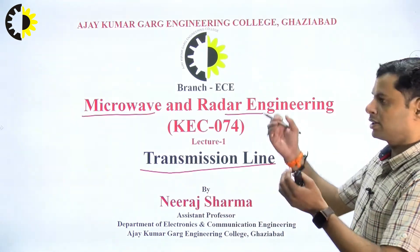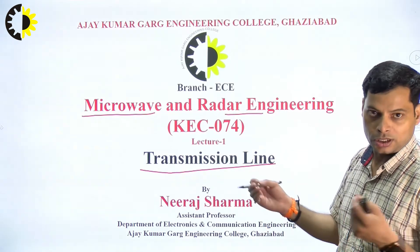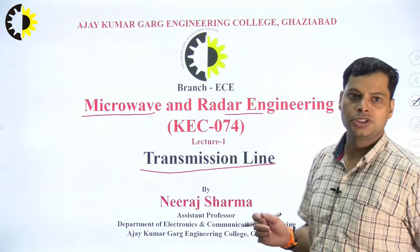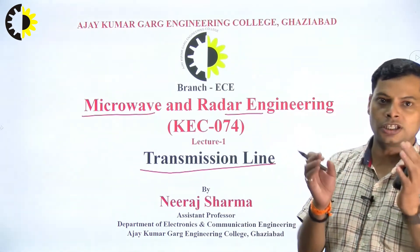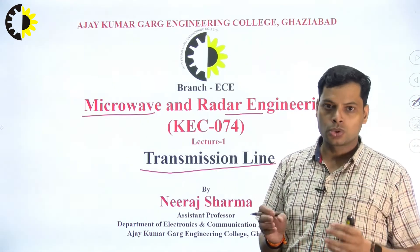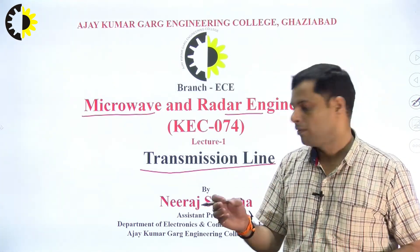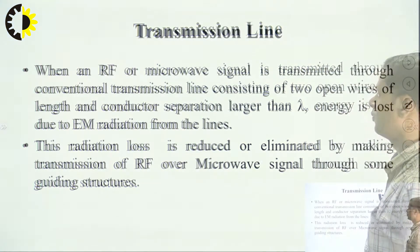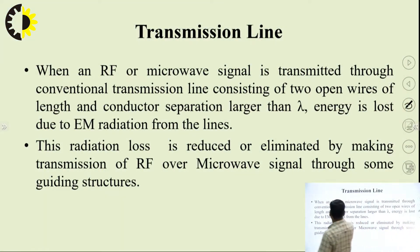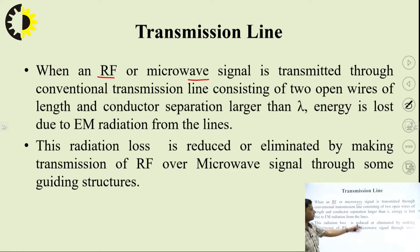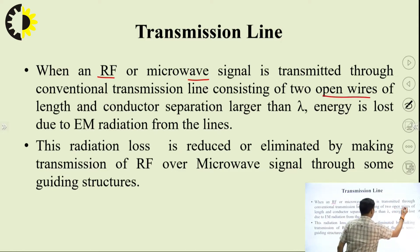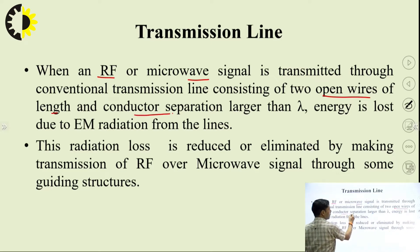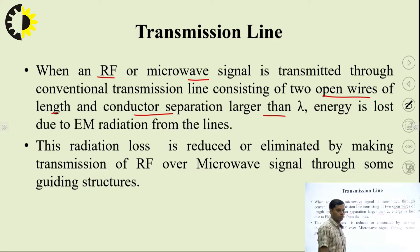Transmission line is a broad name, but it has further classifications that I will discuss separately in the next slides. The transmission line is nothing but a medium used to carry the RF signal from transmitter to the receiver. When an RF — that is, radio frequency or microwave — signal is transmitted through a conventional transmission line consisting of two open wires of length and conductor separation larger than lambda, energy is lost due to EM radiation from the lines.